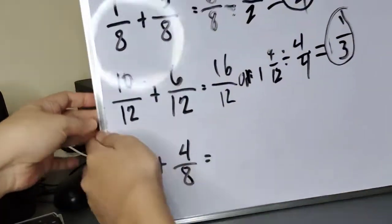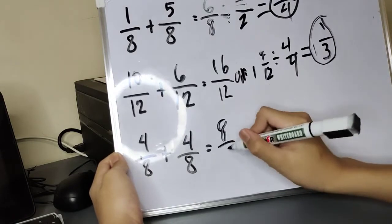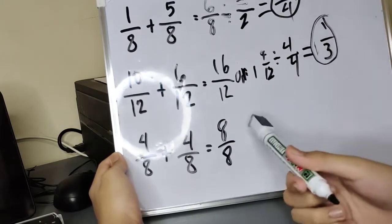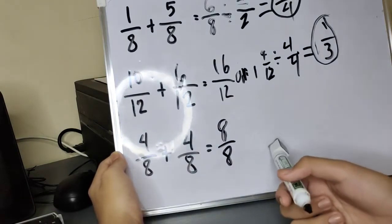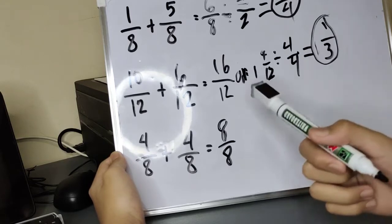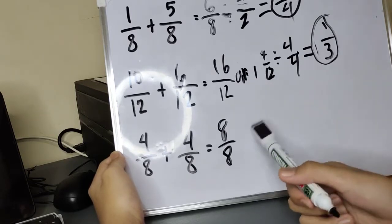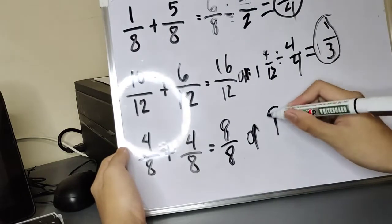Next number, kuya. 4 plus 4. 8. Ano yan? Kapag parehas ang number, i-divide ulit. Pag parehas ang number, considered as 1. Considered as 1. Whole number siya, no?